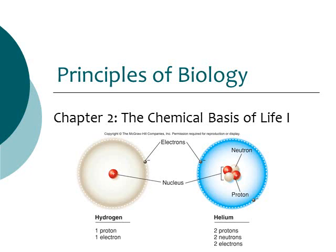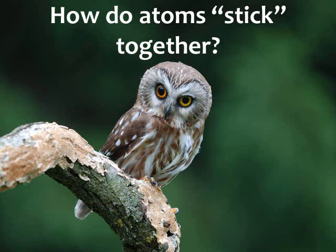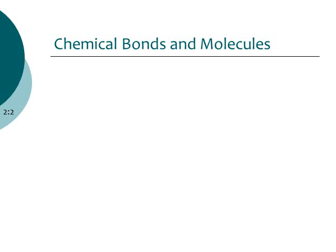This is part two of three looking at chapter two, the chemical basis of life, part one. In the first part of this chapter we talked about atoms — how they have protons, neutrons, and electrons, how they're set up on the periodic table, and generally what they look like. In the second part we're going to look at how these atoms come together to form molecules and how atoms bond together to form our molecules.